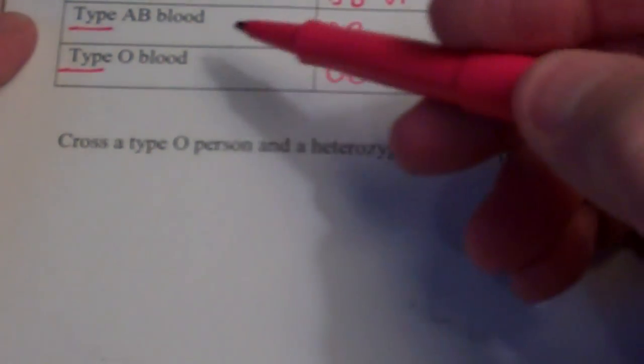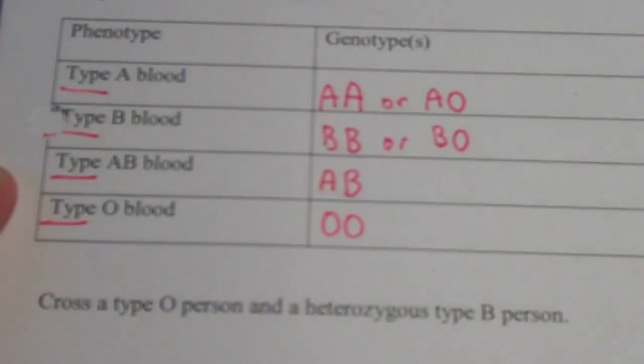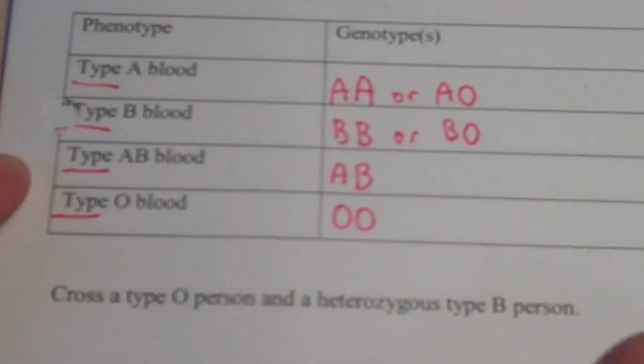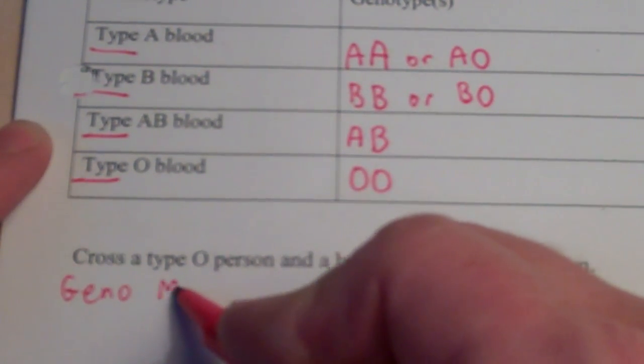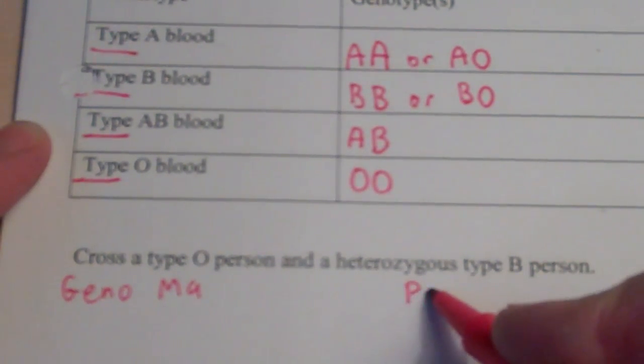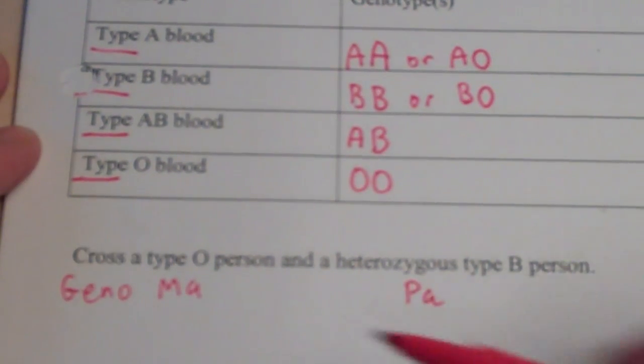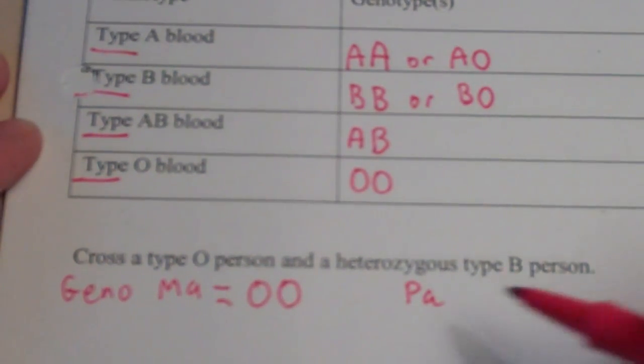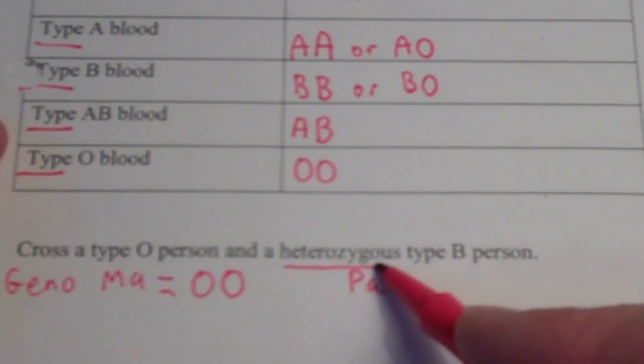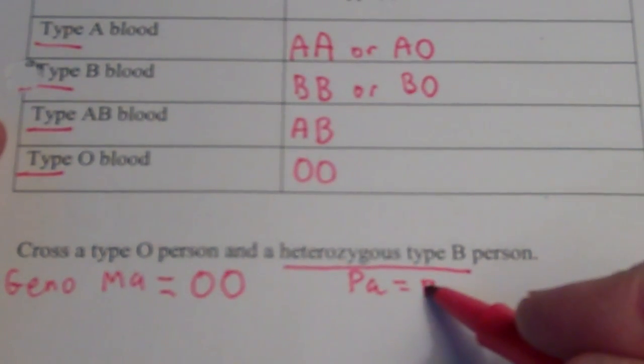So, we will start out by having made our key. Cross a type O person. So, we start by writing the genotype of ma and pa. I'm going to make mom the type O person. So, her genotype is OO. Dad's genotype is, it says he's heterozygous type B. So, BO.